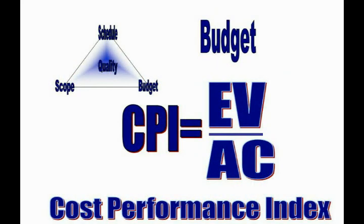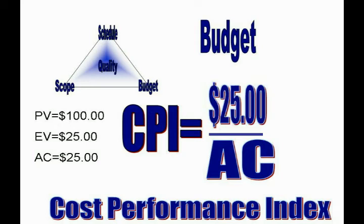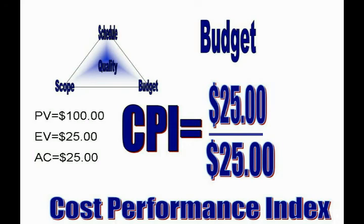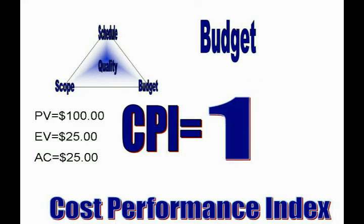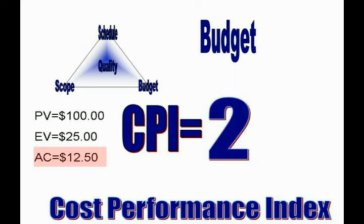The cost performance index, or CPI, is calculated by dividing earned value by actual cost. In our example, we've incurred $25 of cost to produce $25 of value, so our CPI is 1. If it had taken our engineer an hour to unbox the server, our CPI would be 0.5, indicating we had spent 2 times the cost per value unit. If it had taken 15 minutes, our actual cost would be $12.50 for $25 of value, giving a CPI of 2.